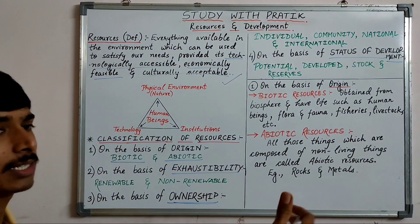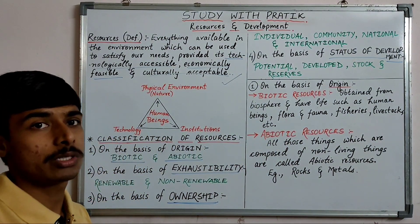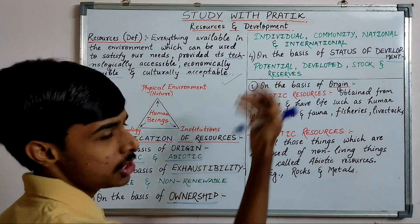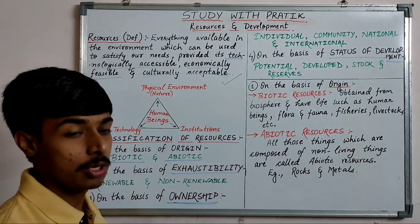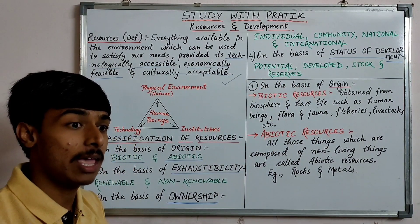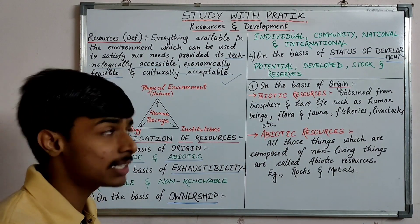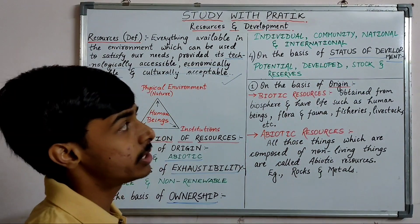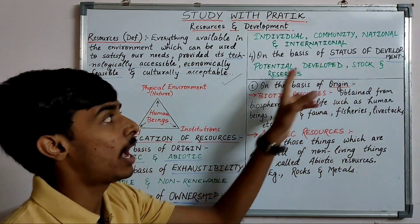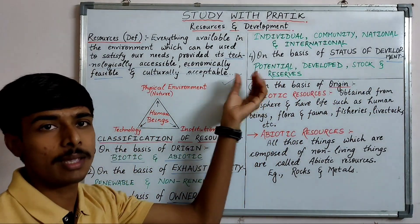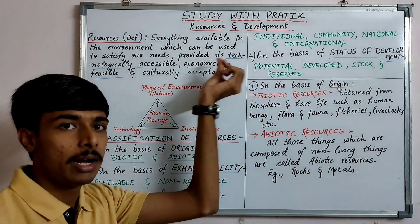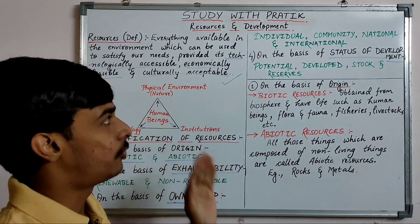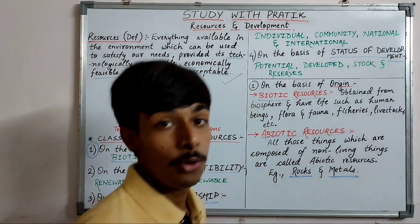On the basis of development: potential resources are those which can be called potential — they haven't been fully used. Then there are developed resources, stock, and reserves. We will discuss each of these in detail further.